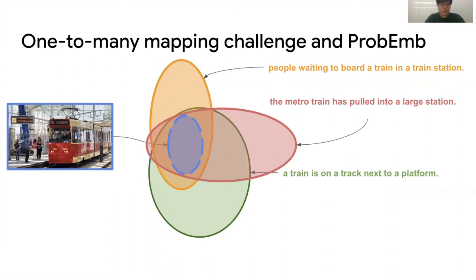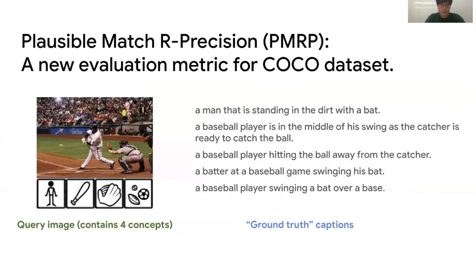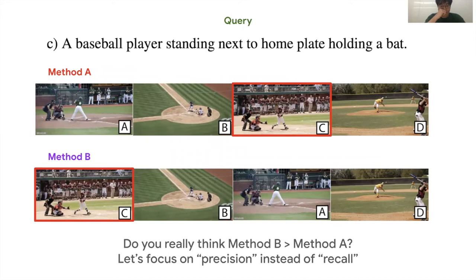The one-to-many correspondence also affects the evaluation protocol. The left boxes represent the matched images or ground-truths in the dataset. If we just measure the performance by recall, method B is always better than method A. But is this actually true?